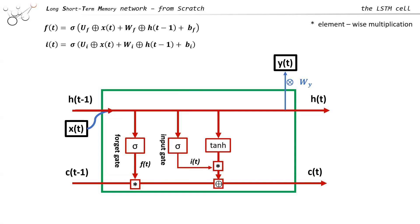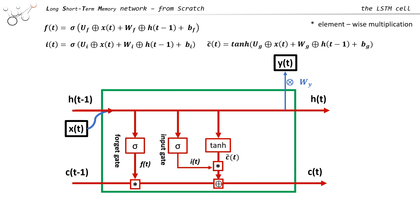For the input gate we add learnables: we multiply Xt with UI and Ht-1 with WI, and add bias BI. The network learns which information passes through the input gate. We do the same for the gate denoted C-tilde, which has the same structure but uses tanh. Note that there is no single fixed LSTM structure — different LSTM structures exist and may vary in these details.